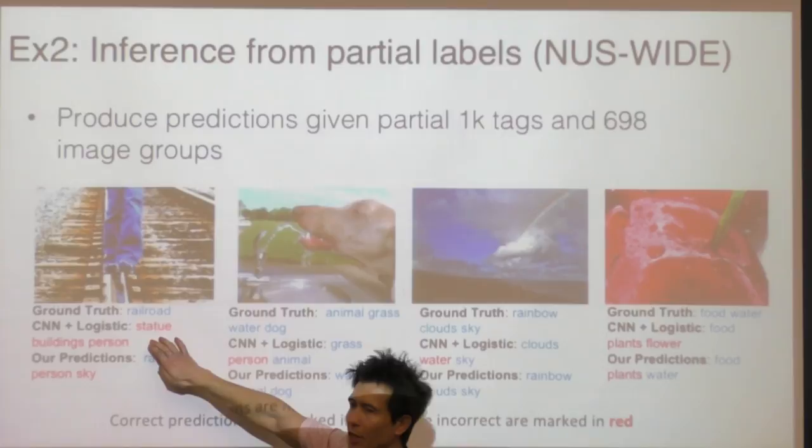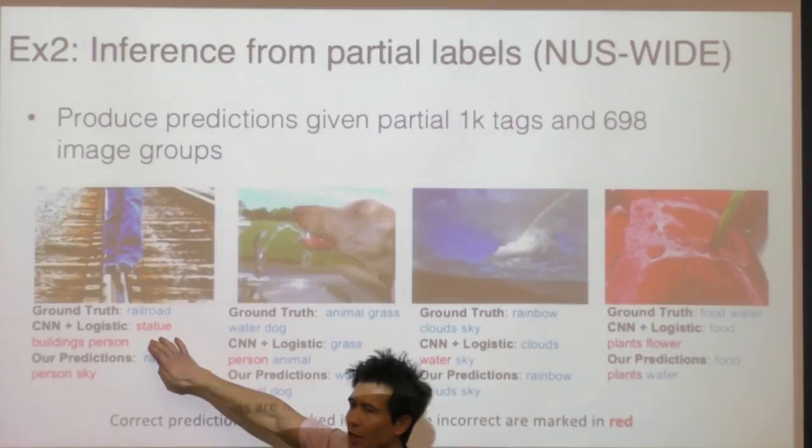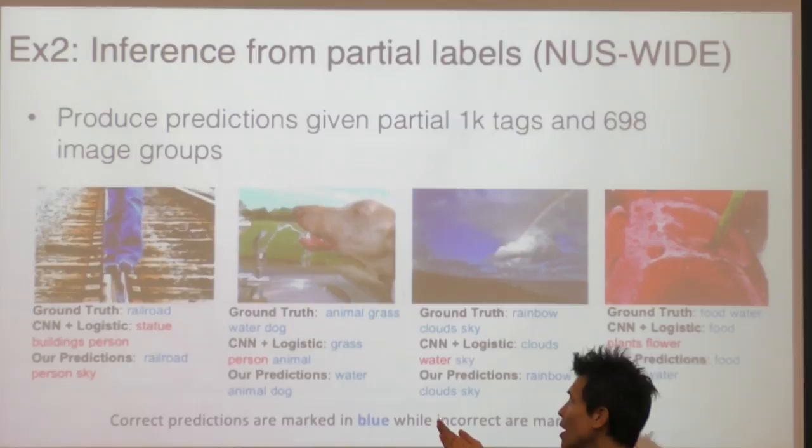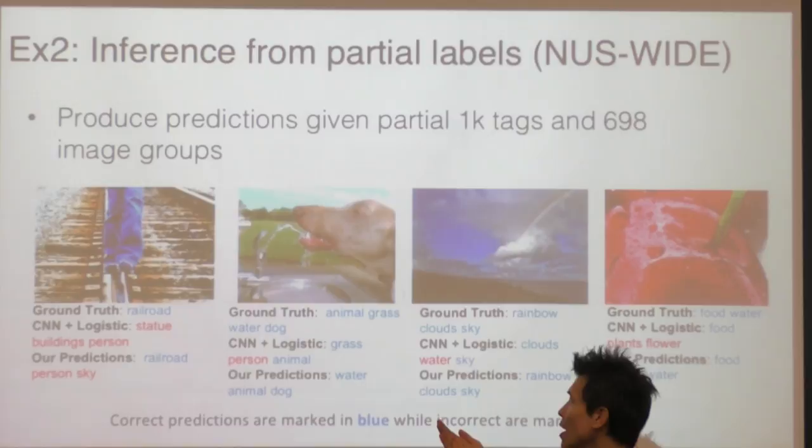Qualitatively, here are some examples. These are test images at the top, ground truth labels in blue, predictions from a CNN with independent logistics, and then our refined estimates. The ground truth is far from perfect — for example, the ground truth tag for the first image is only 'railroad,' while our method produces railroad, person, and sky. Person is an incorrect label, but it's a reasonable prediction and our method is able to clean up some results.